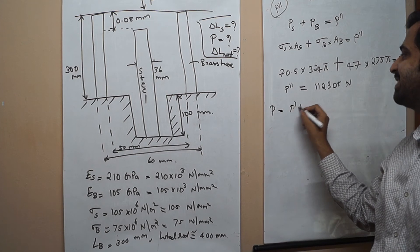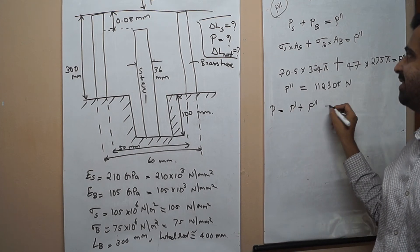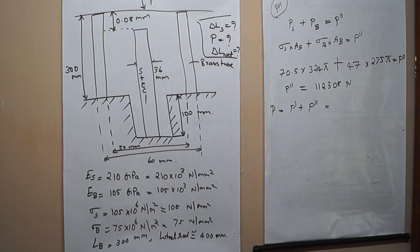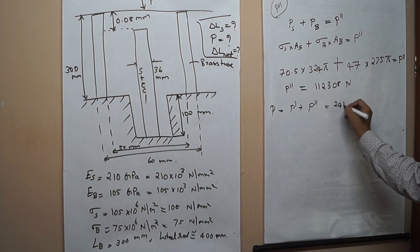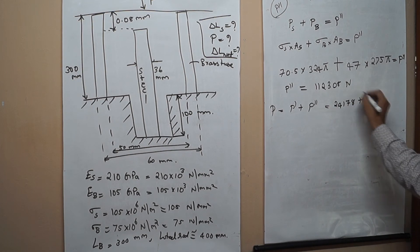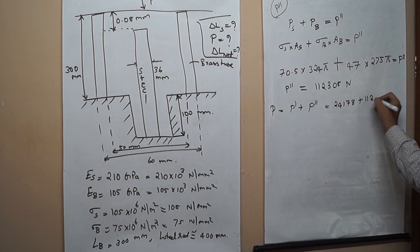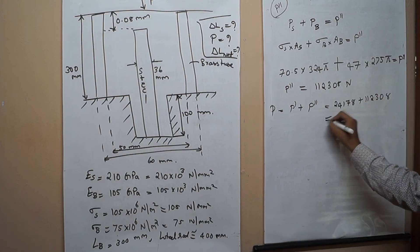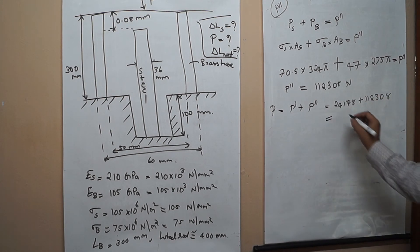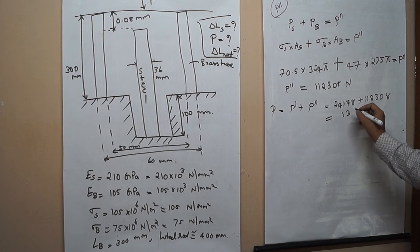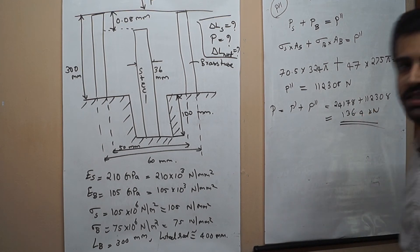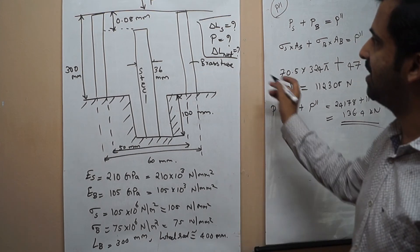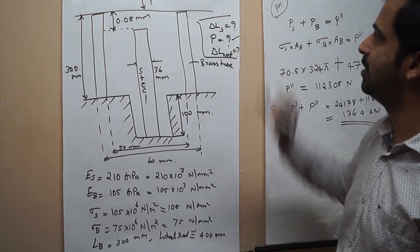P equals P' plus P2'. P' was 24,178 N and P2' was 112,308 N, giving a final value of 136.4 kilo Newton. This is our answer for the first part — the load P required for shortening of the steel rod has been found.